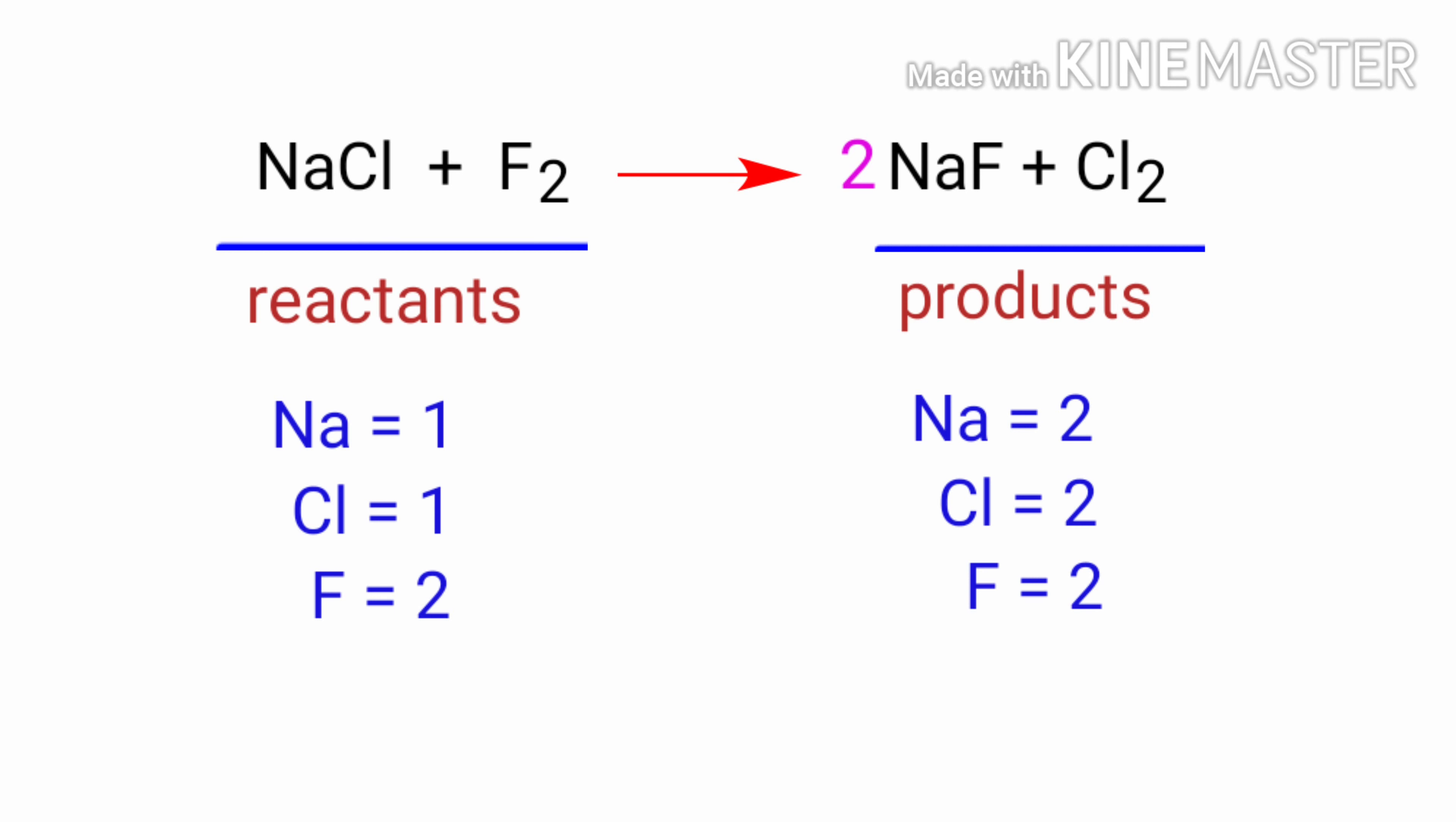The fluorine atoms are balanced. Now we need to balance the sodium and chlorine atoms. To do this, we need to put a coefficient of two in front of NaCl.